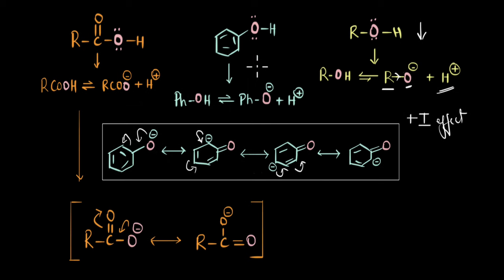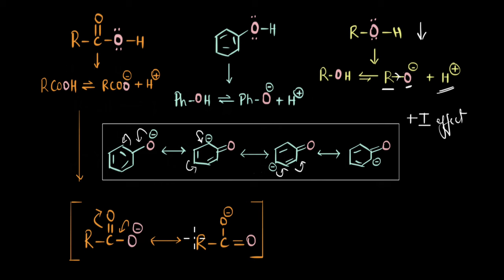Let's recap the factors that stabilize and destabilize the conjugate bases. In the case of alcohols, the +I effect of the alkyl group destabilizes the alkoxide ion by adding more electron density to an already electron-rich oxygen atom. The phenoxide ion is more stable because the negative charge is delocalized throughout the entire benzene ring. And in the carboxylate ion, two equivalent resonance structures contribute equally, and unlike the phenoxide ion where charge partly rests on less electronegative carbon, the negative charge in the carboxylate ion switches between highly electronegative oxygen atoms. These factors make the carboxylate ion highly stable, making carboxylic acids most acidic.